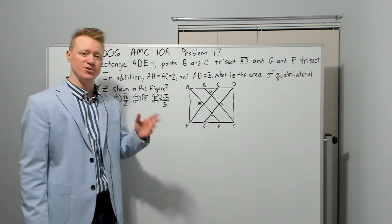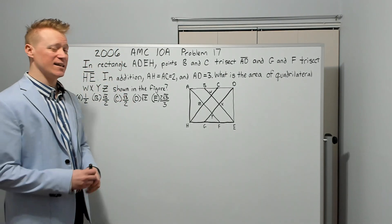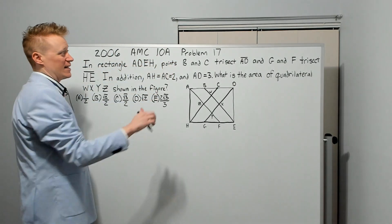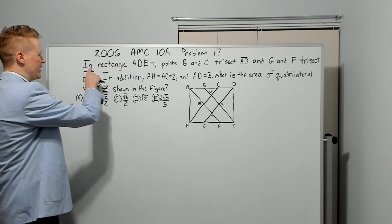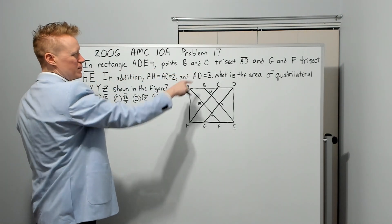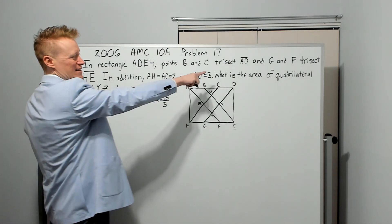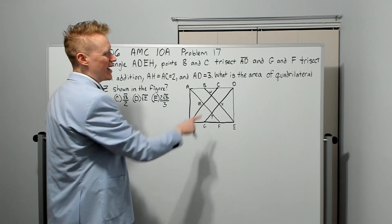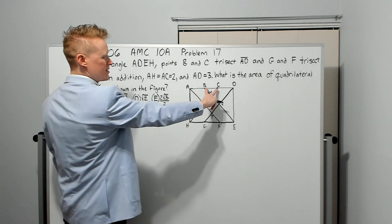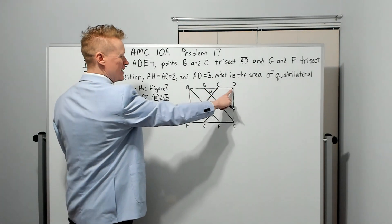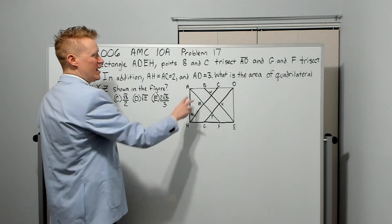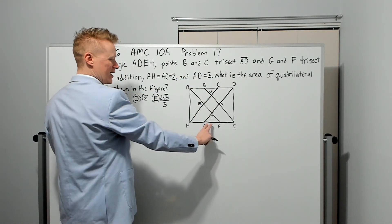Let's get to this one: 2006 AMC 10A, Problem 17. In rectangle ADEH, points B and C trisect AD, and G and F trisect HE. So where are B and C? They're right here, trisecting this into equal, equal, equal segments. That's what that means. And G and F trisect this, so those are all equal.